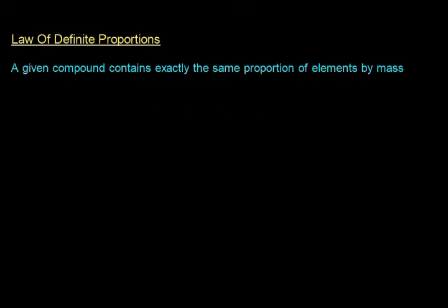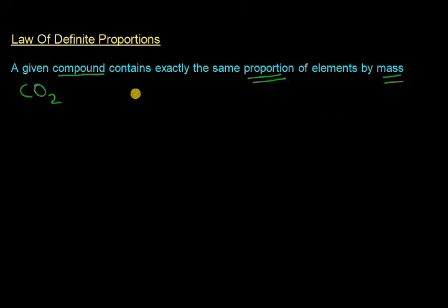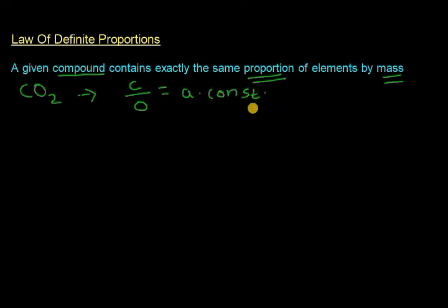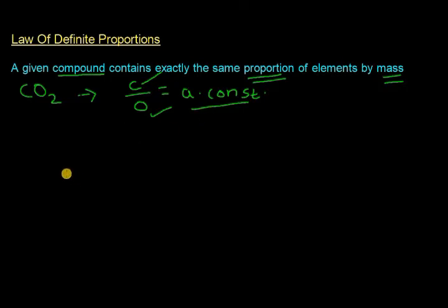To understand this, let us take the example of carbon dioxide, CO2. It is a compound with two elements: carbon and oxygen. Two key words in the statement are 'proportion' and 'mass.' This means the ratio of carbon to oxygen will always remain constant. No matter how much carbon dioxide you have, or what the source is, it will always be made of carbon and oxygen in a constant ratio.